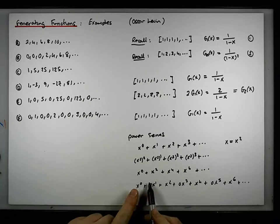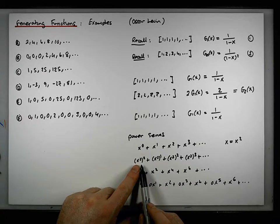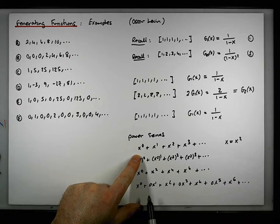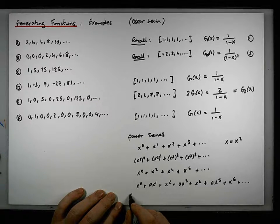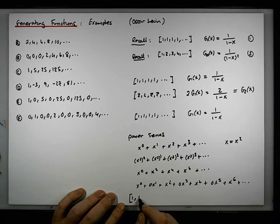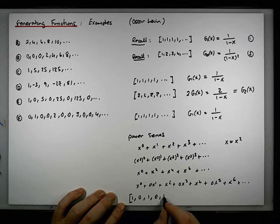So effectively this power series, which we developed from the substitution into the constant sequence of x squared, is actually encoding the sequence. The coefficient of x⁰ is one, the coefficient of x¹ is zero, the coefficient of x² is one, the coefficient of x³ is zero, then one, zero, one, and so on.